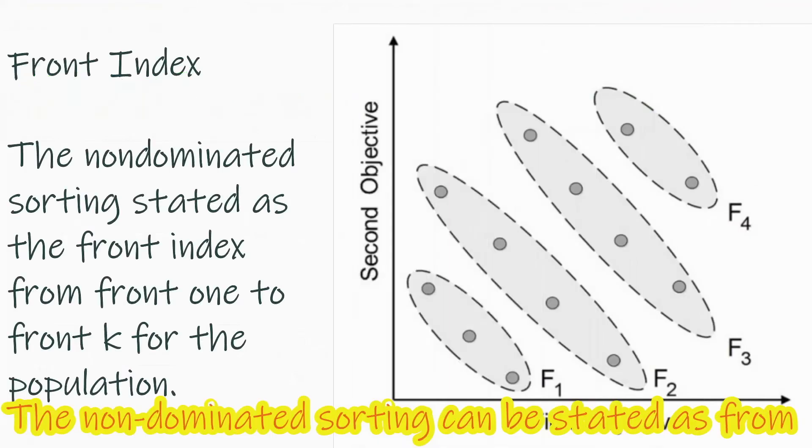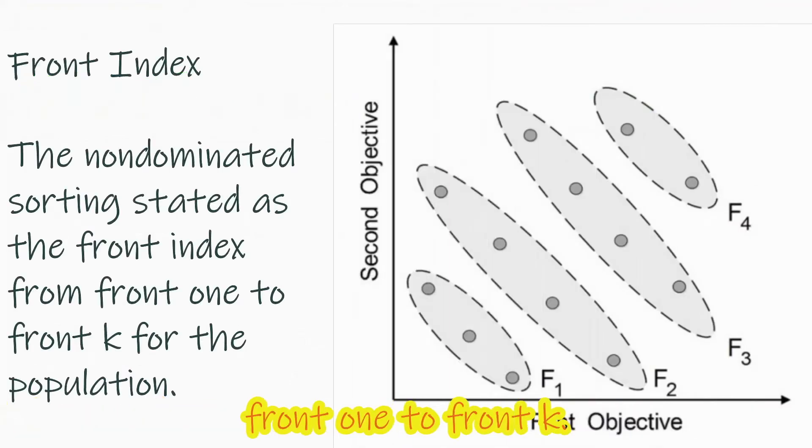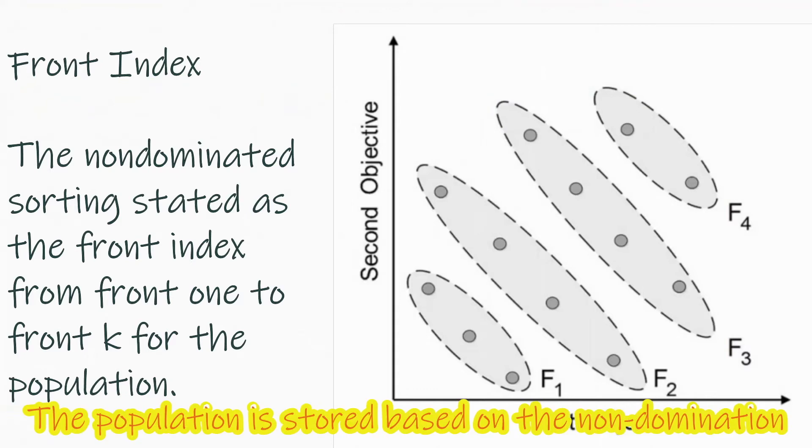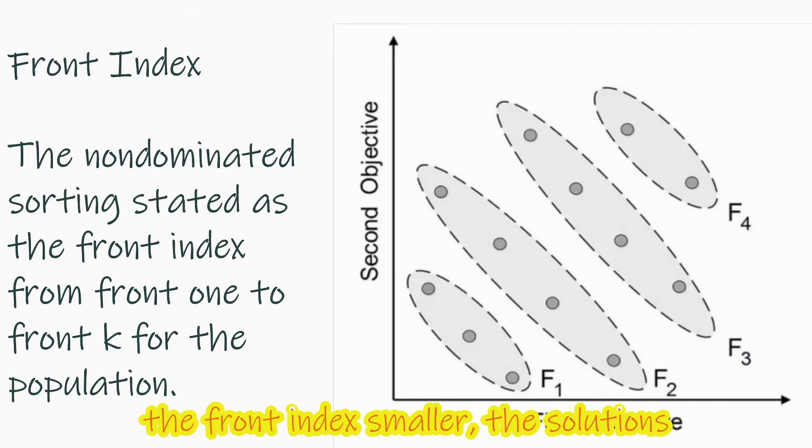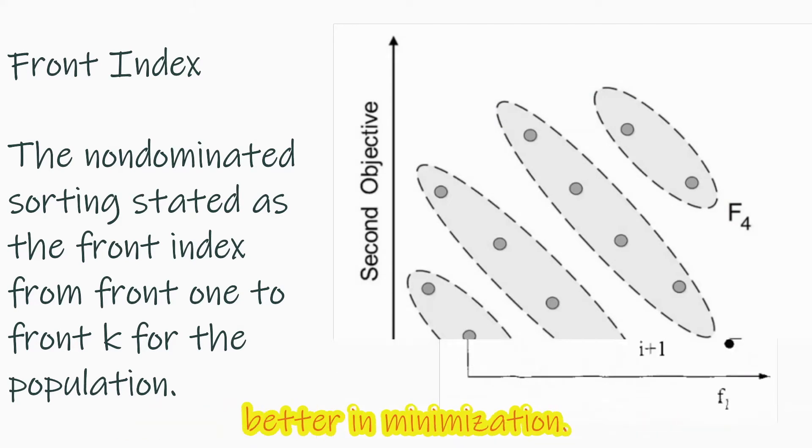The non-dominated sorting can be stated as the front index from front 1 to front k. The population is sorted based on the non-domination. The solutions assign a rank to its level when the front index smaller, the solutions better in minimization.